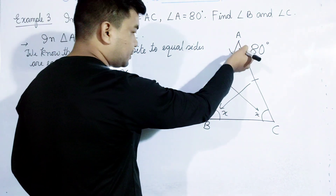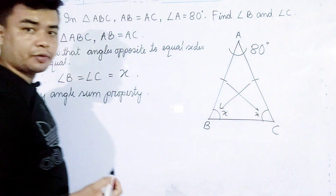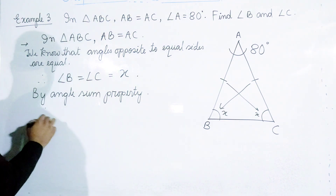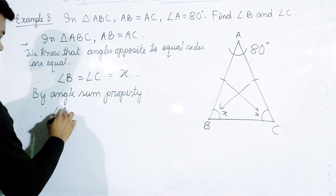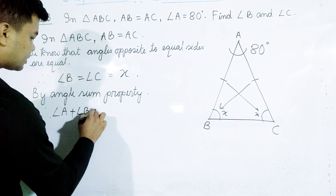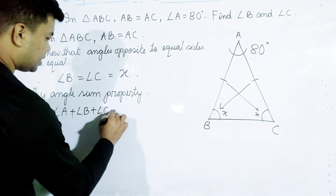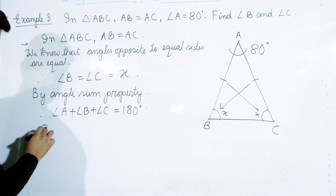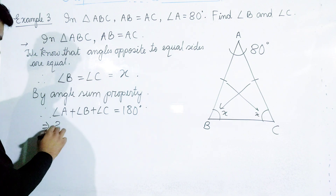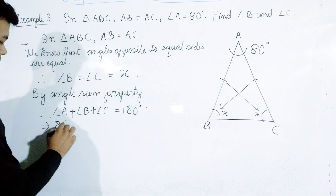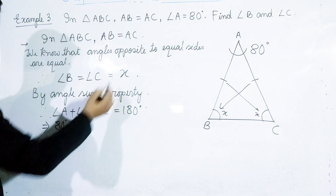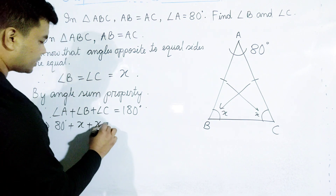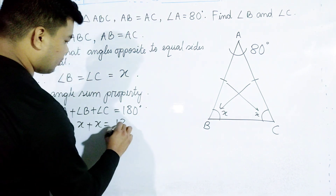The sum of angles in a triangle is equal to 180 degrees. Therefore, angle A plus angle B plus angle C equals 180 degrees. Angle A is equal to 80 degrees, angle B is equal to x, and angle C is equal to x.